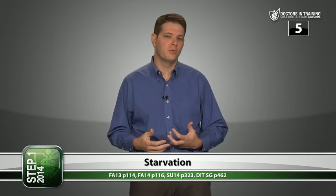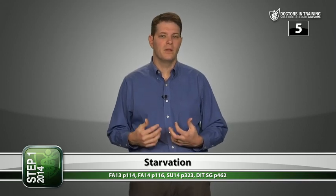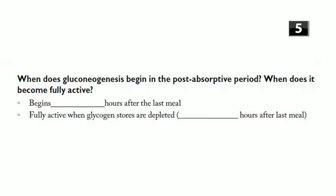Question five: when does gluconeogenesis begin in the post-absorptive period, and when does it become fully active? It begins four to six hours after the last meal. Gluconeogenesis becomes fully active when glycogen stores are depleted, which is 10 to 18 hours after the last meal. It takes at least 10 hours in a well-fed person with a healthy liver to deplete glycogen stores, so if you're trying to enter ketosis it's going to take a while.